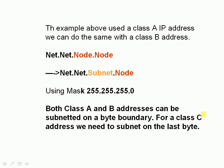The example we just covered was a class A address, and we can do the same with a class B address. A class B address is normally network, network, node, node, and we can reinterpret that as network, network, subnet plus node — using the mask 255.255.255.0, where the zero gets rid of the last node byte. Both class A and class B can be subneted on a byte boundary — we're using 255 as the subnet mask. For a class C address, we need to subnet on the last byte, so we can't use the byte boundary, and we'll cover class C subnetting with more examples in the next video.